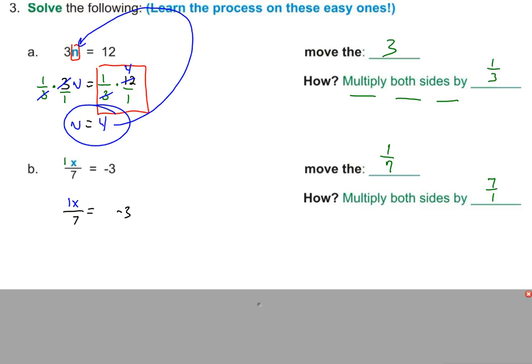We just copied it so that now I can do seven over one times the left and seven over one times the right, right? We multiply the left by seven over one. We multiply the right by seven over one. Make sense? Multiplying by the reciprocal.